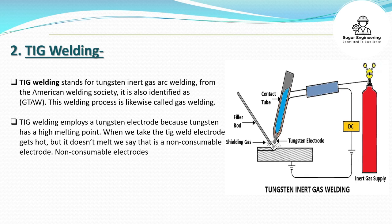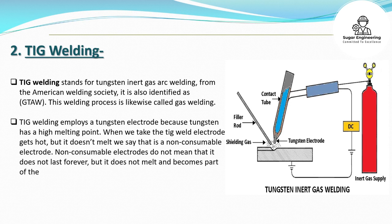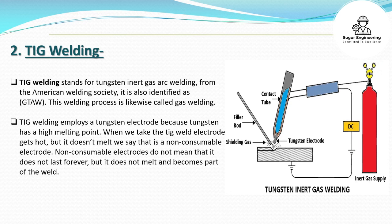2. TIG Welding. TIG welding employs a tungsten electrode because tungsten has a high melting point. The TIG weld electrode gets hot but it doesn't melt — we say that it is a non-consumable electrode. Non-consumable electrode does not mean that it lasts forever, but it does not melt and become part of the weld.